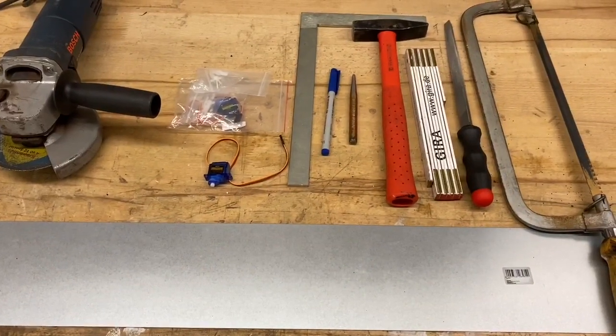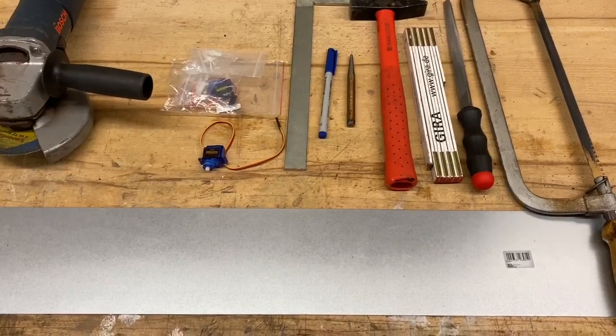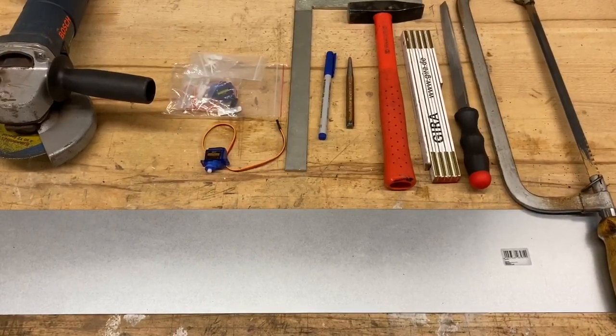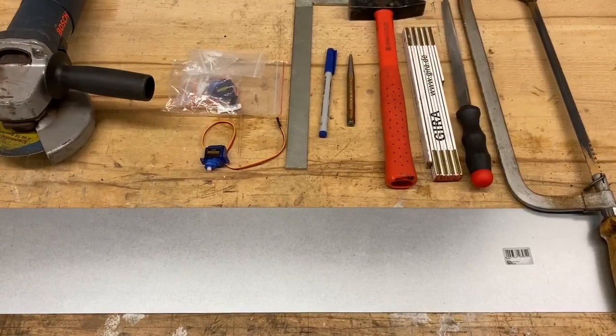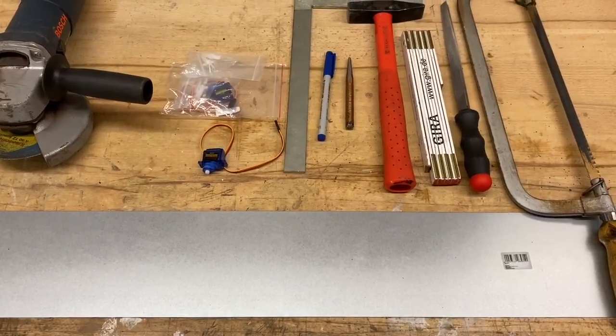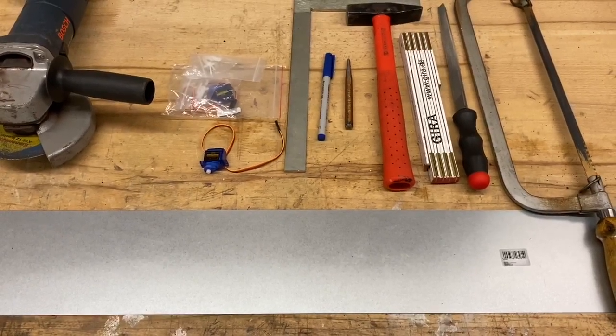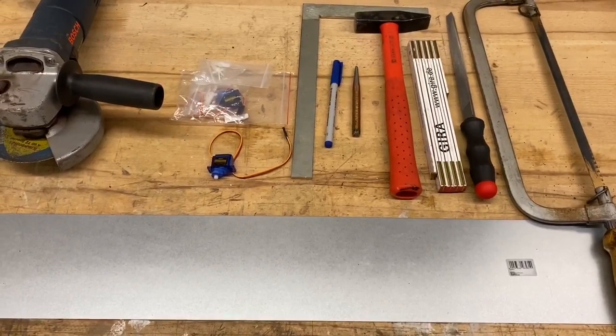So, was benötigen wir dazu? Im Baumarkt kauft erstmal ein Glattblech. Ich habe jetzt eins für 6 Euro, 1 Meter mal 12 Zentimeter mit einem Millimeter Stärke gekauft. Da passen jetzt 50 Servo-Halterungen drauf. Das heißt, 12 Cent kostet mich dann eine Halterung.